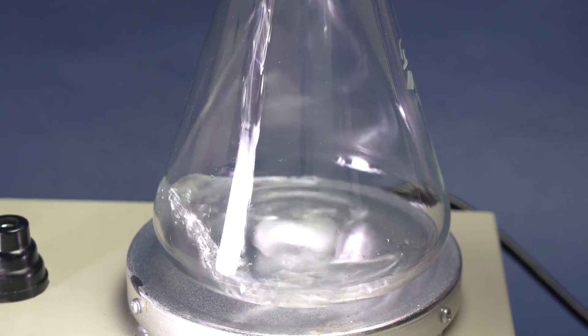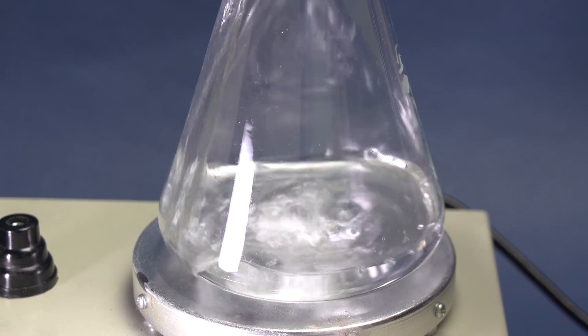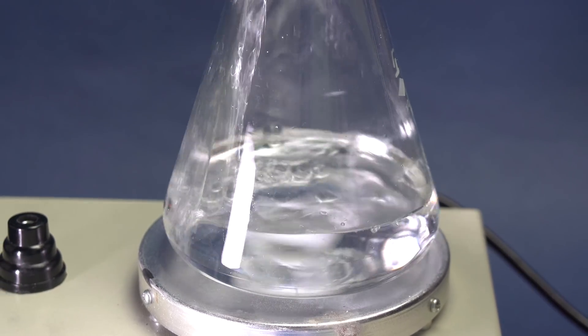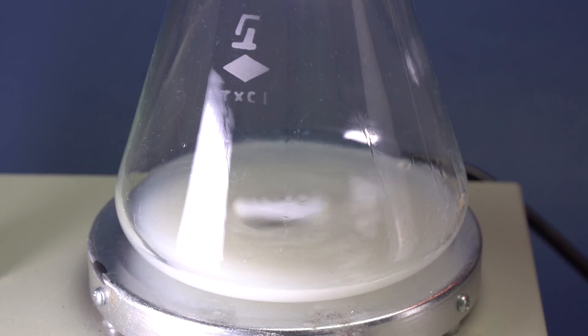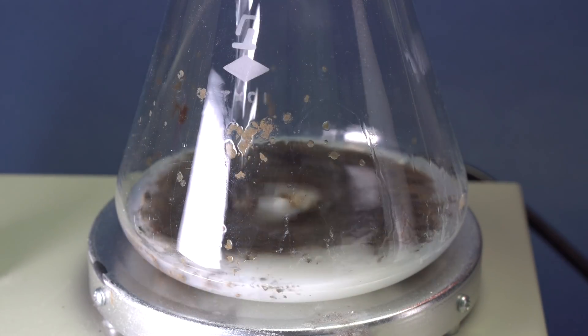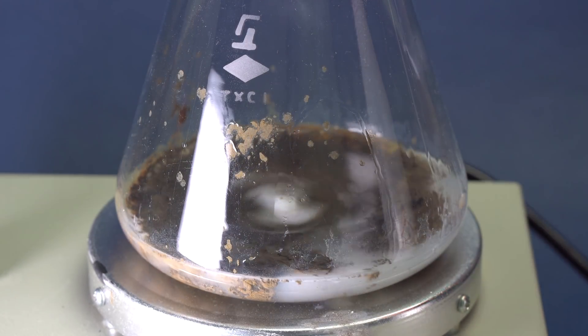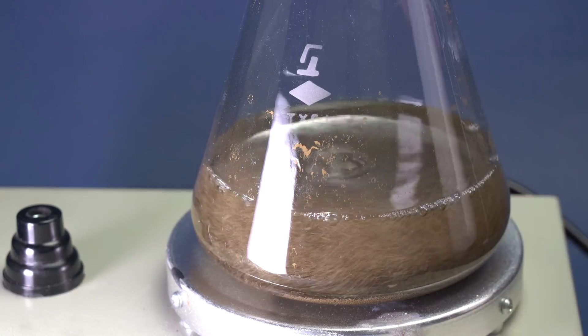Finally, you can make a regular mirror, which we can hardly imagine our life without, from silver nitrate. To do that, first we need to pour some sodium hydroxide into silver nitrate solution, then we need to dissolve the obtained silver oxide in an ammonia solution.